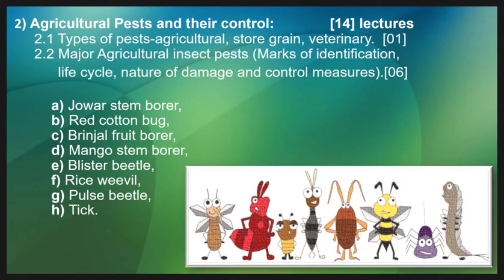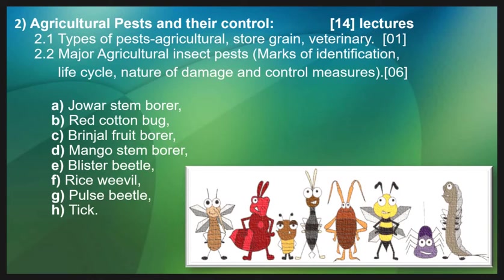Now we will see Unit 2, that is agricultural pest and their control. Before that, let us understand what a pest is. A pest is any organism that causes a harmful effect on humans and human property — it may be insects or other animals. In Topic 2.1, we will study the different types of pests such as agricultural pest, storage pest, and veterinary pest. Animals or insects that have a harmful effect on agricultural crops fall under agricultural pest; those harmful to stored grain fall under stored grain pest; and those harmful to veterinary animals are veterinary pest.